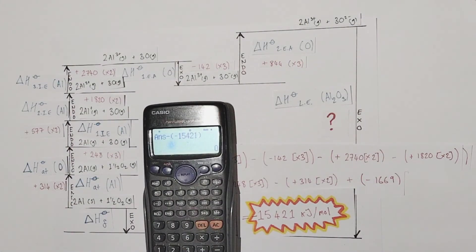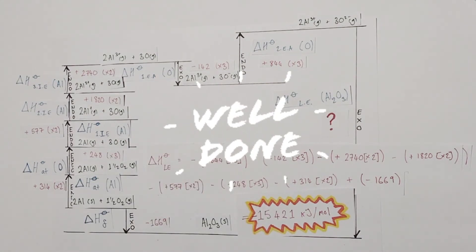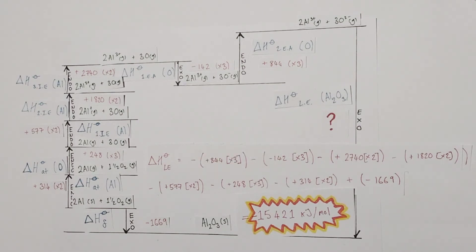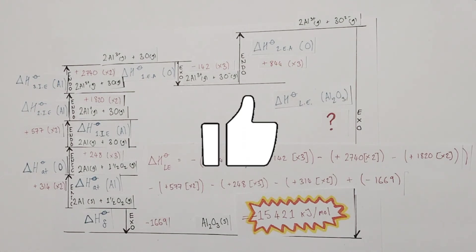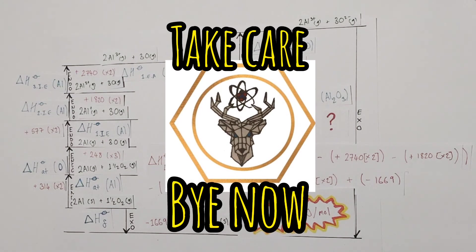There you have it — well done for getting to the end. That's probably the biggest Born-Haber cycle you'll ever have to solve, and if you can solve this one, you can solve any Born-Haber cycle. If you found this video useful, please give it a like and subscribe to the channel to keep updated with our latest content. Videos go up pretty much on a weekly basis and your support is always hugely appreciated. Thanks as always and take care!